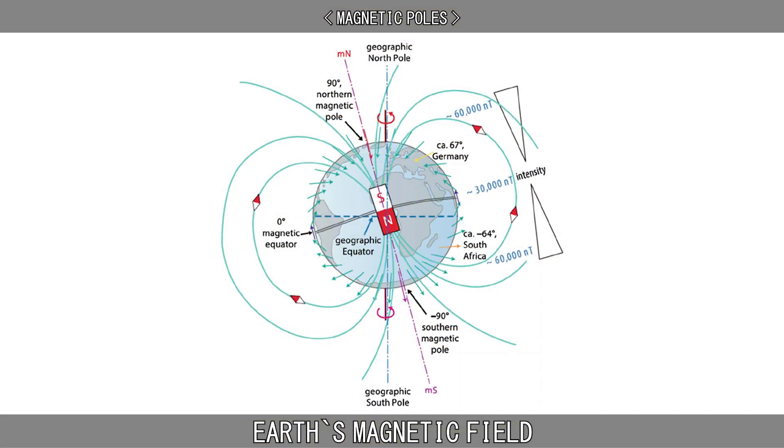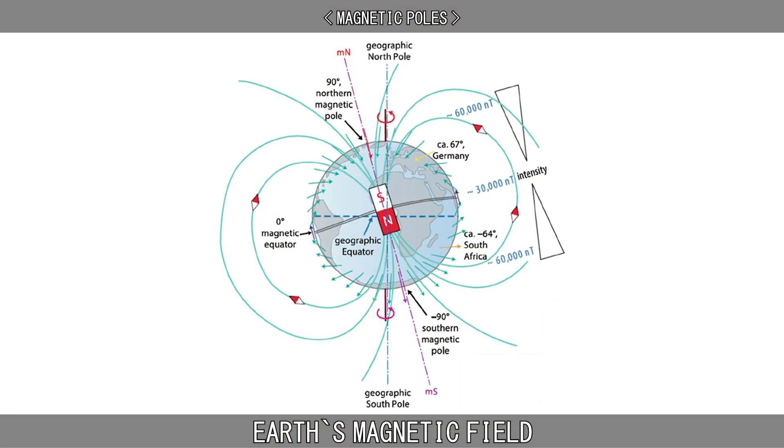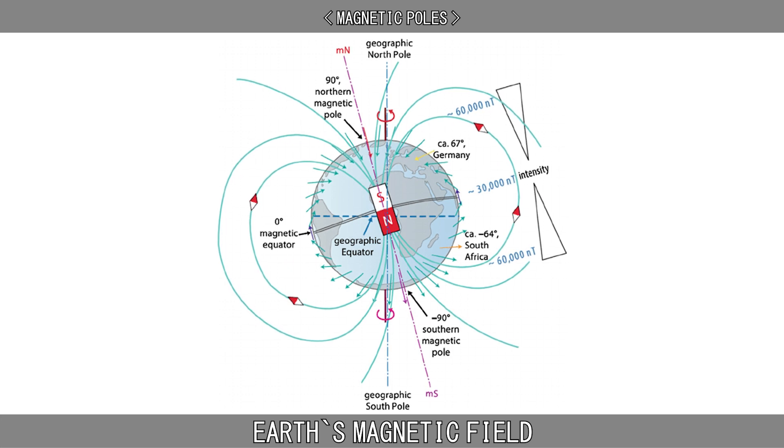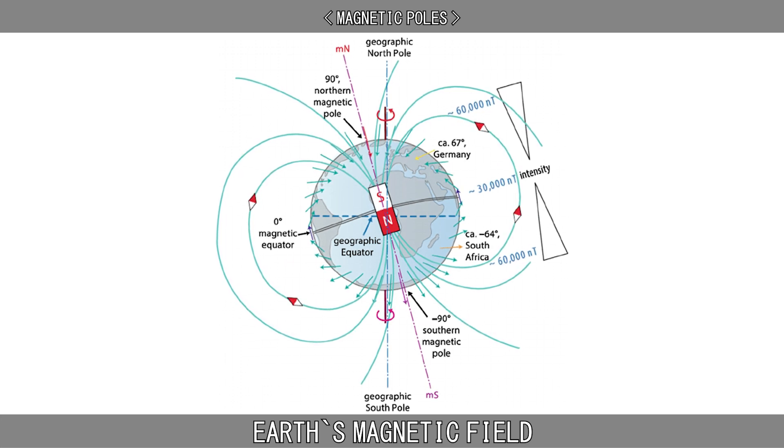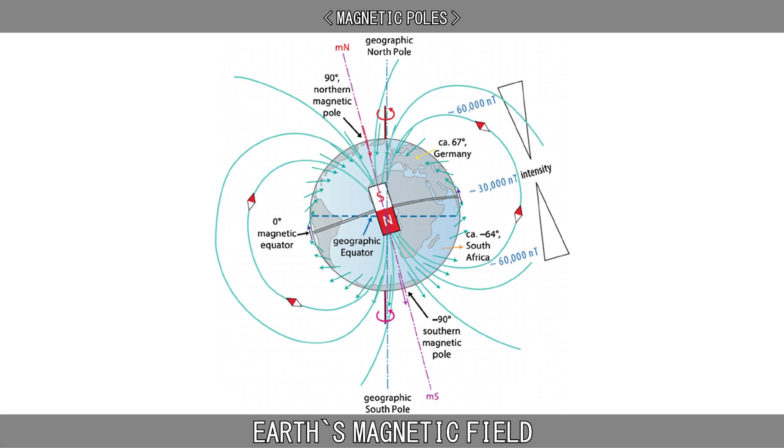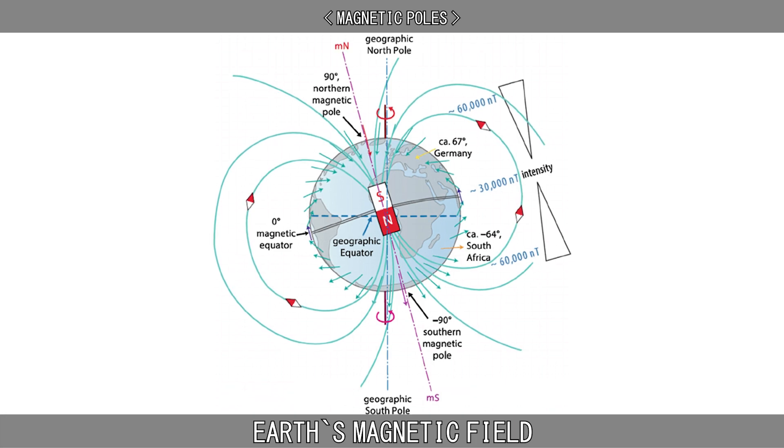The intensity of the magnetic field is greatest near the magnetic poles and weakest near the equator. The north and south magnetic poles occur in the northern and southern hemisphere, respectively.